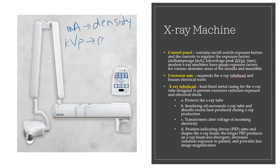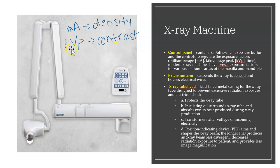kVp looks at contrast. If you increase kVp, you get many shades of gray in your radiograph — low contrast. If you decrease kVp, you see mostly black and white — high contrast, not many shades of gray.